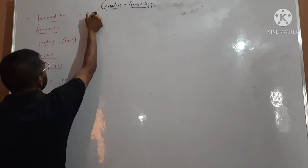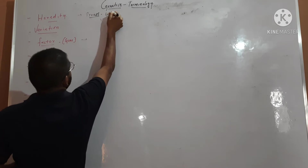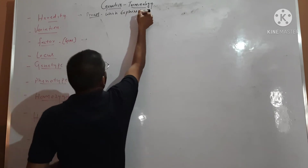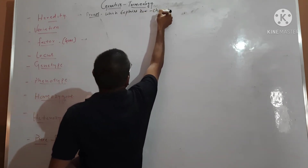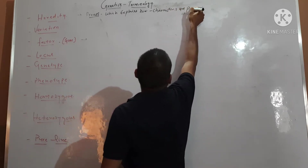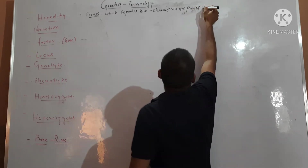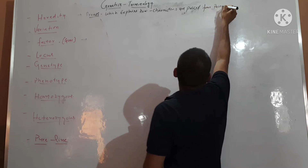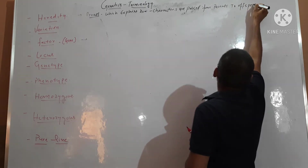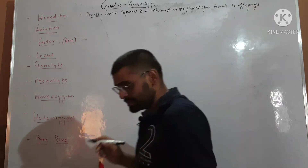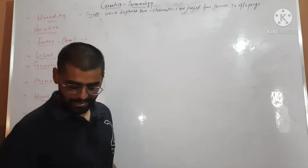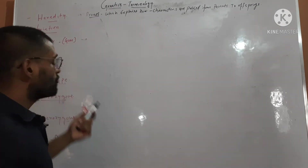Hereditary is a process which explains how characters are passed from parents to offspring. So this is a process or phenomenon which explains how characters are passed from parents to offspring.